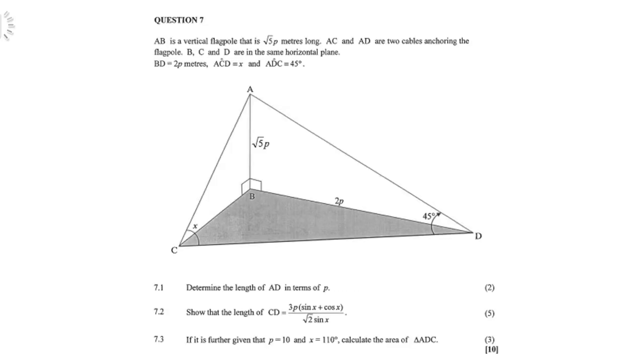This is Question 7, solving of triangles. And this is a 3D sketch. Please be careful. AB is a vertical flagpole that is square root of 5p meters long. AC and AD are two cables anchoring the flagpole. BC and D are in the same horizontal plane.